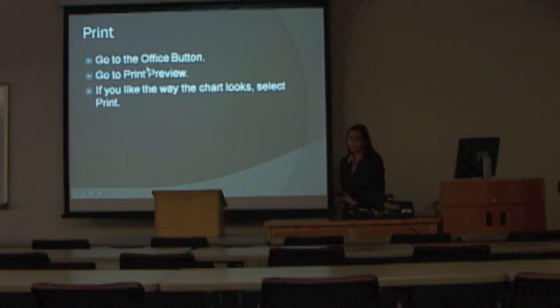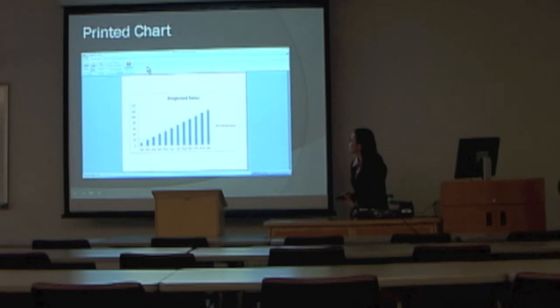To print this chart, you'll go to your Office button. That's at the top left where it has all those options hidden. You'll go to the print preview. I like to make sure I'm not printing more or less than what I intend. So I like to go to the print preview. And if you like it, then you just go to print. This is what it looked like after I did that. There's this print at the top left.